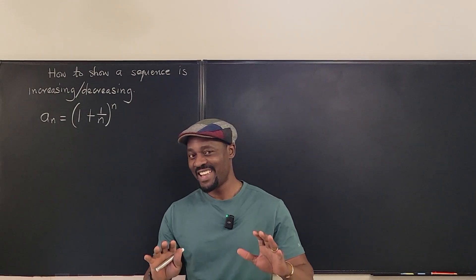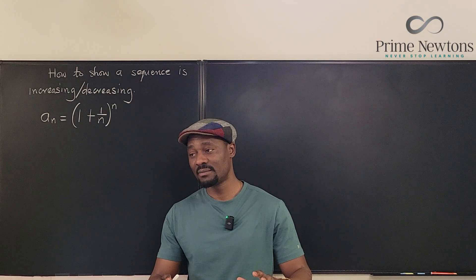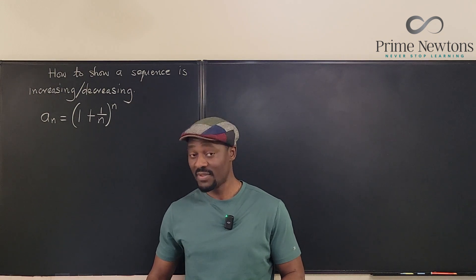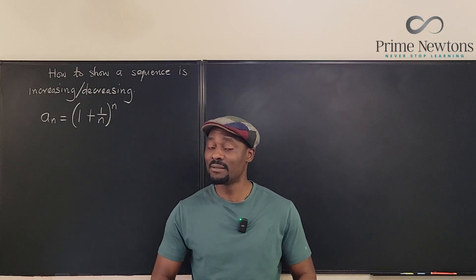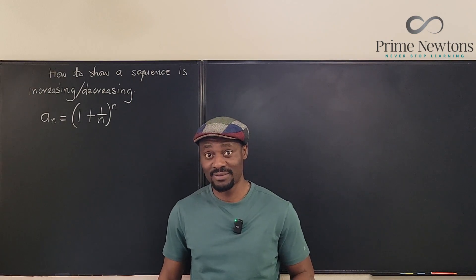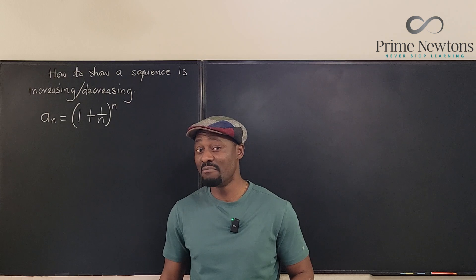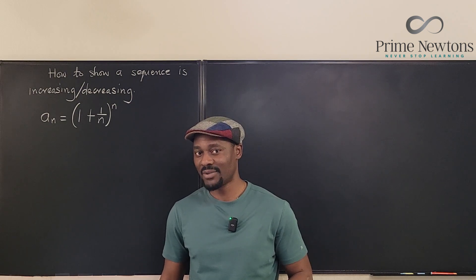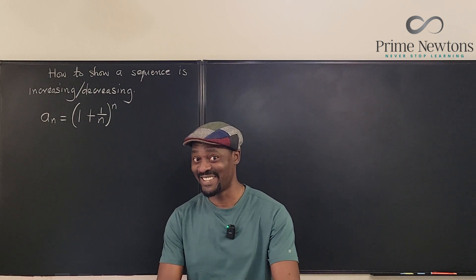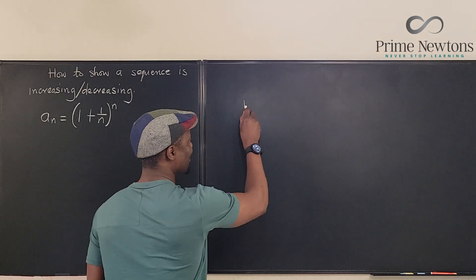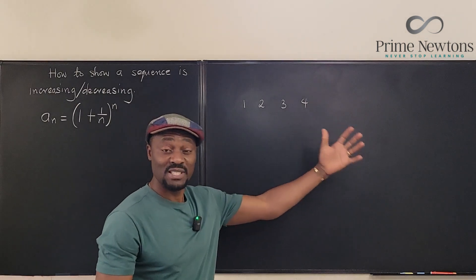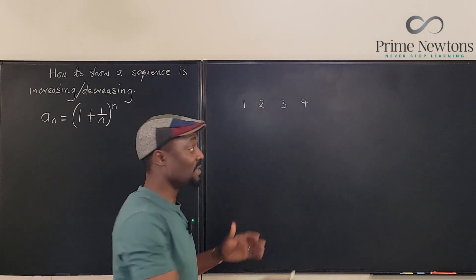Welcome to another video. The term 'monotone' means increasing or decreasing, and 'increasing' means non-decreasing — so if it's constant, it is counted as monotone. For example, the sequence 1, 2, 3, 4 — the numbers are clearly increasing in size, so you call this a monotone sequence.